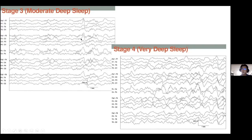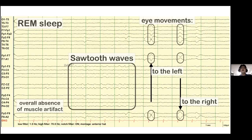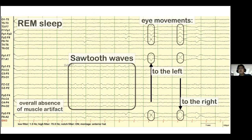Going into further sleep, slow waves start to appear — this is known as slow-wave sleep, formerly stages three and four of non-REM. After non-REM, you go into REM sleep, where the eyes are actively moving. The background activity shows a theta saw-tooth morphology, especially over the central region. There is an overall episode of muscle artifact, and EMG recording during this stage should show atonia.